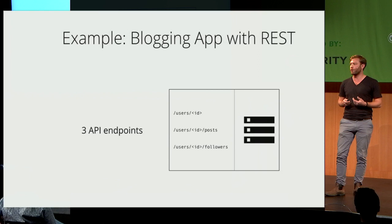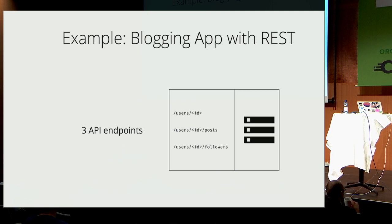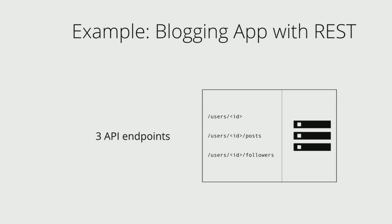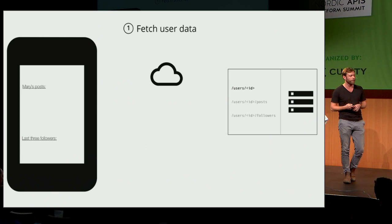Typically in a REST API we'd have three different endpoints: slash users to return information about a given user, users ID posts to return all posts of a specific user, and users ID followers to return the followers of a specific user.